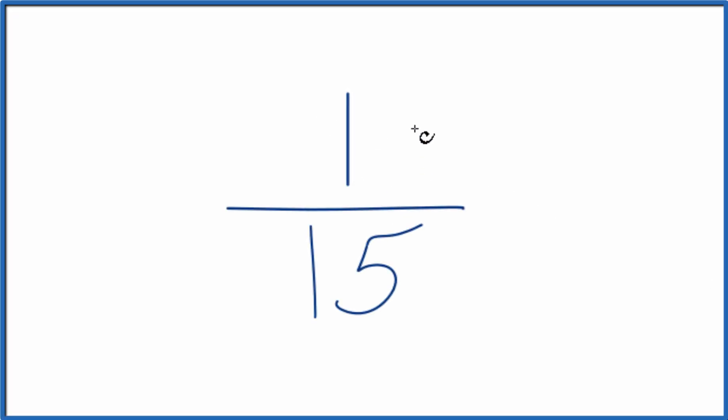Let's write the fraction 1 over 15 as a decimal. And here's how we're going to do it. 1 over 15, since 1 is smaller than 15, we know that our answer is going to be less than 1. It's going to be a decimal here.